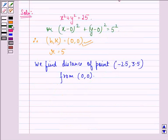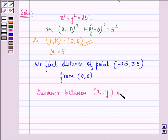Now, from the distance formula, we know that distance between two points (x₁,y₁) and (x₂,y₂) is given by √[(x₂-x₁)² + (y₂-y₁)²].